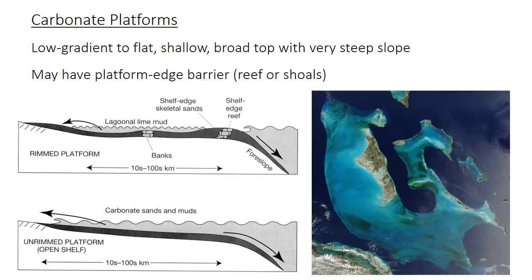The broad, flat top of a carbonate platform is typically quite shallow — maybe only a few meters to a few tens of meters in depth. Something like 60% of the Great Bahama Bank is less than 5 meters water depth. The platform top can be surrounded by a barrier of reefs or shoals, making it a rimmed platform, but some platforms lack a barrier and are called unrimmed platforms. The margin — the boundary between the shallow carbonate environment and the open ocean — is quite sharp, dropping off extremely steeply into the deep ocean.